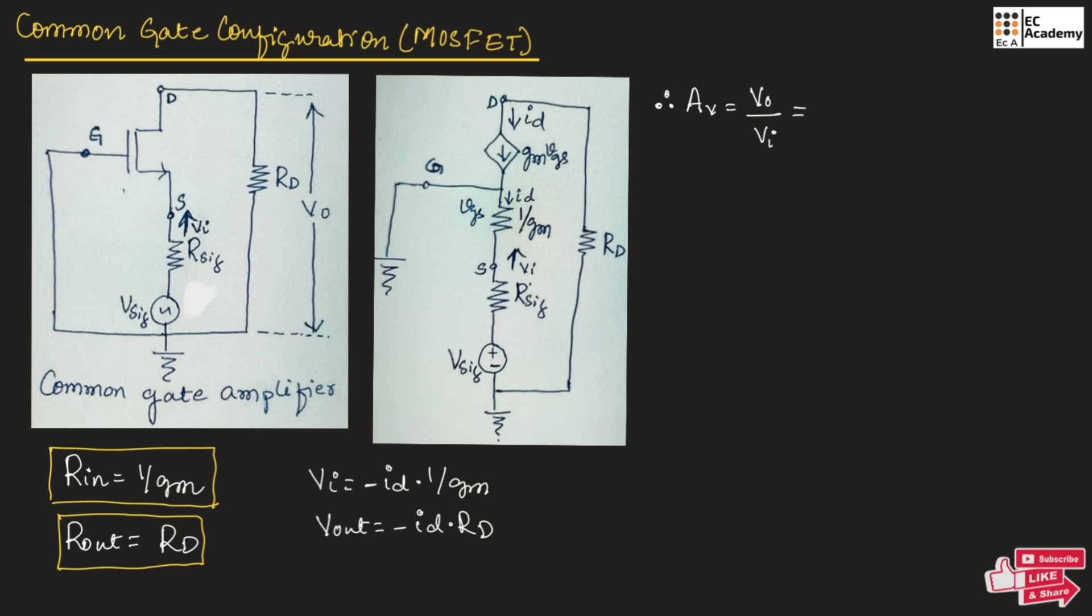So output voltage is minus id into rd divided by minus id into 1 by gm. We can cancel out this id, therefore the voltage gain can be written as gm into rd.